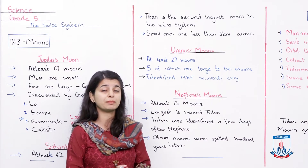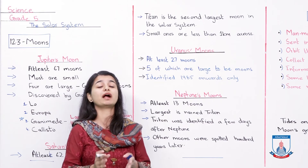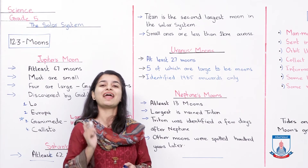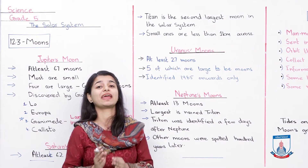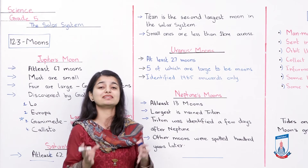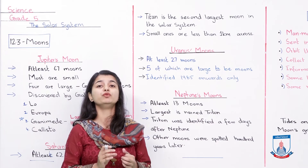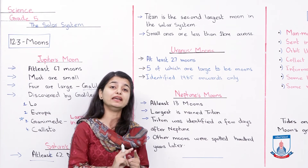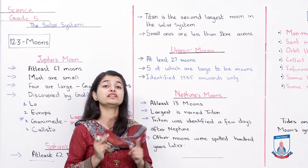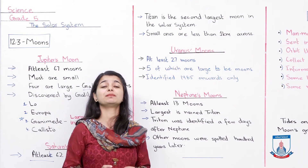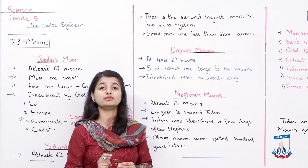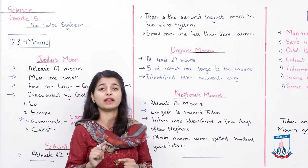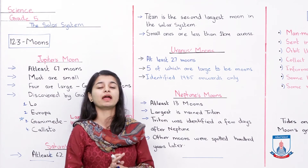Ab hum baat kar chuke hain Neptune ke moons ke baare mein, Uranus ke moons ke baare mein, aur Jupiter ke moons ke baare mein. Earth aur Mars humne pehle cover kar liya tha. Aap soche honge ke Venus wagairah jaise planets ke baare mein humne baat kyun nahi ki. Unn planets mein moons hai hi nahi — kuch planets mein koi bhi moon nahi hai. Moon ki definition ek dafa phirse recall karein: woh wali entities jo kisi planet ke irgird orbit karti hain unko moons kehte hain. Moon rock se bana hua tha, aur orbiting ka matlab hai woh poori journey jo circular jaati hai around another entity.